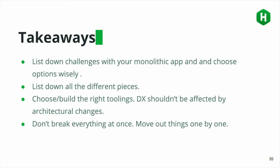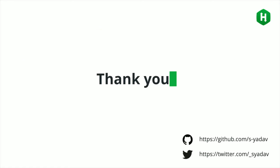Key takeaways: architectural change takes a lot of time, so if you're planning to move away from a monolithic app, first list down the challenges you're facing. Then choose wisely between monorepo or multi-repo. List down all the different pieces, create a plan for moving things one by one, and choose the right tooling. If the tooling isn't available, build it — but make sure developer experience improves rather than degrades. Don't break everything at once; move things incrementally so you learn throughout the process.